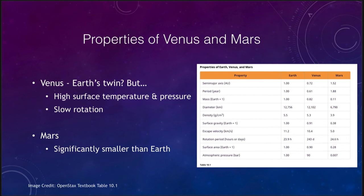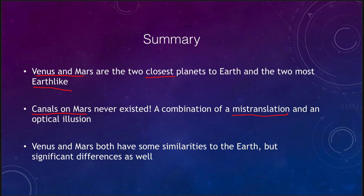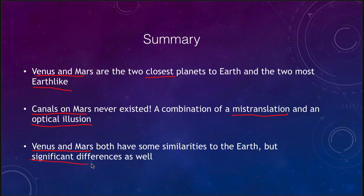In summary, Venus and Mars are the two closest planets to the Earth and the most Earth-like, having the biggest similarities to Earth of any planets, though neither is exactly like the Earth. Canals on Mars never existed — it was a combination of mistranslation of the original observer's word and essentially an optical illusion. Recall that observations were done by drawing, looking with your eye rather than making photographs, and photography technology was just emerging at that time. Your mind tends to put reason and pattern to things that are essentially randomness. Venus and Mars both have some similarities to the Earth but also very significant differences.